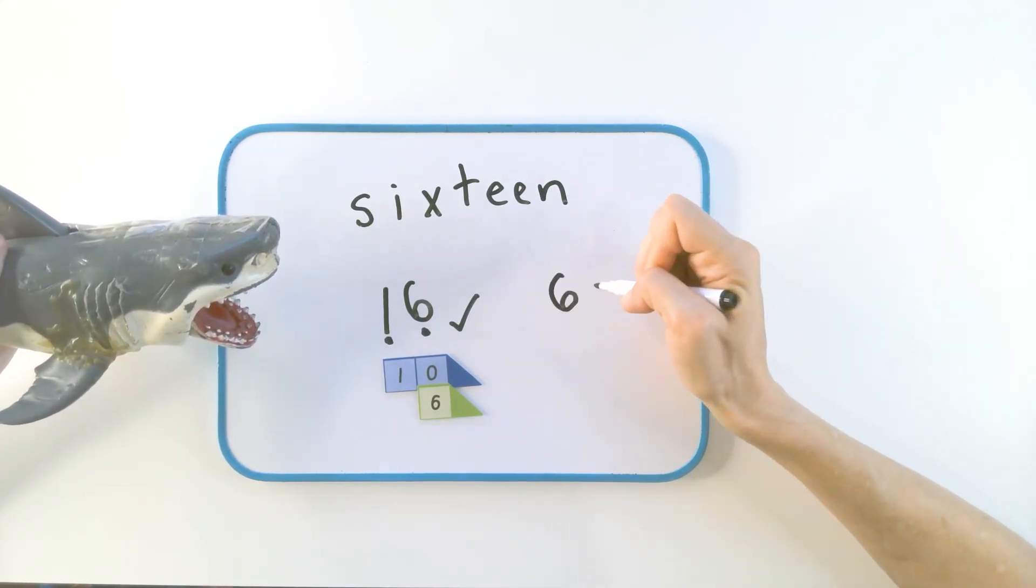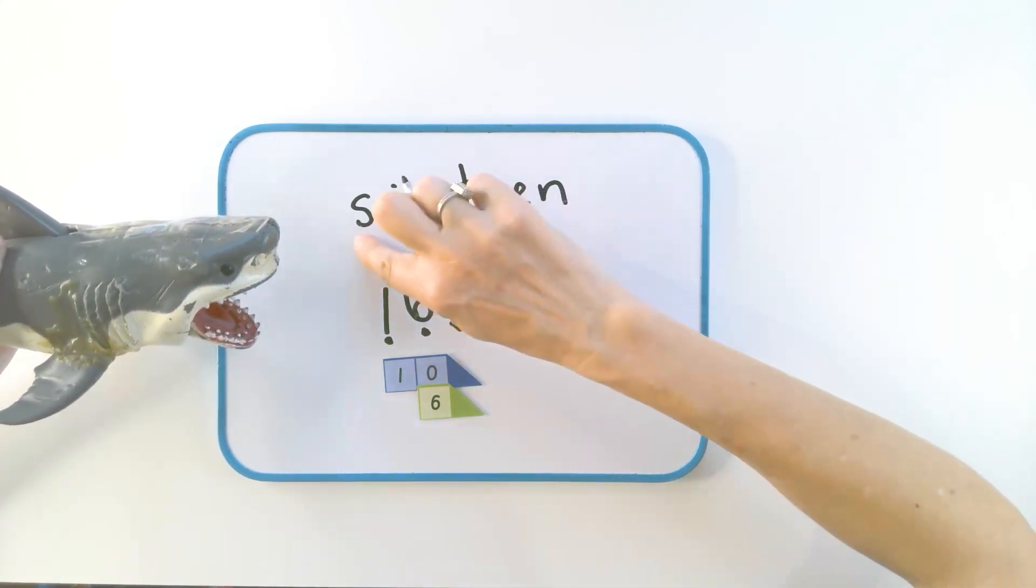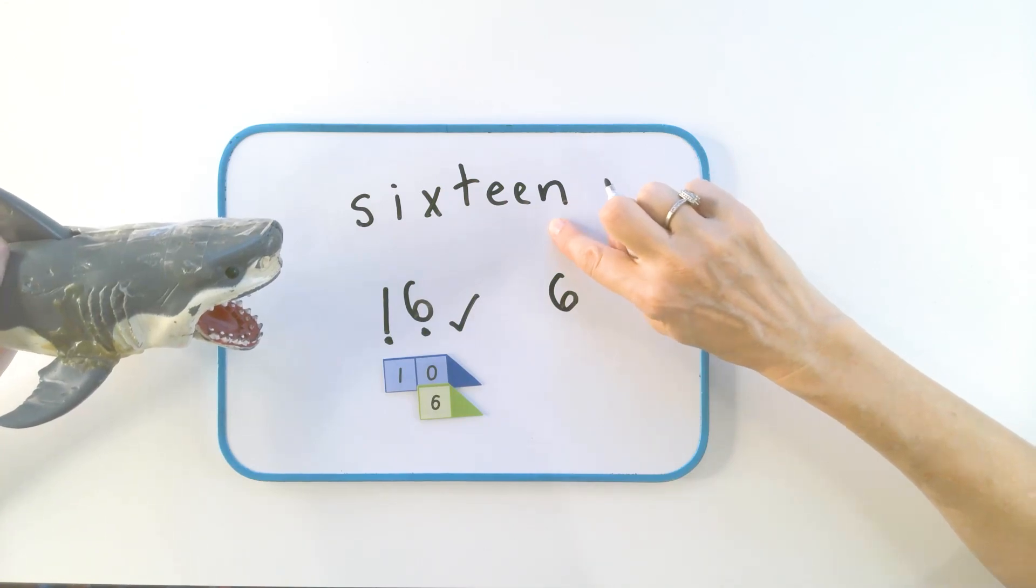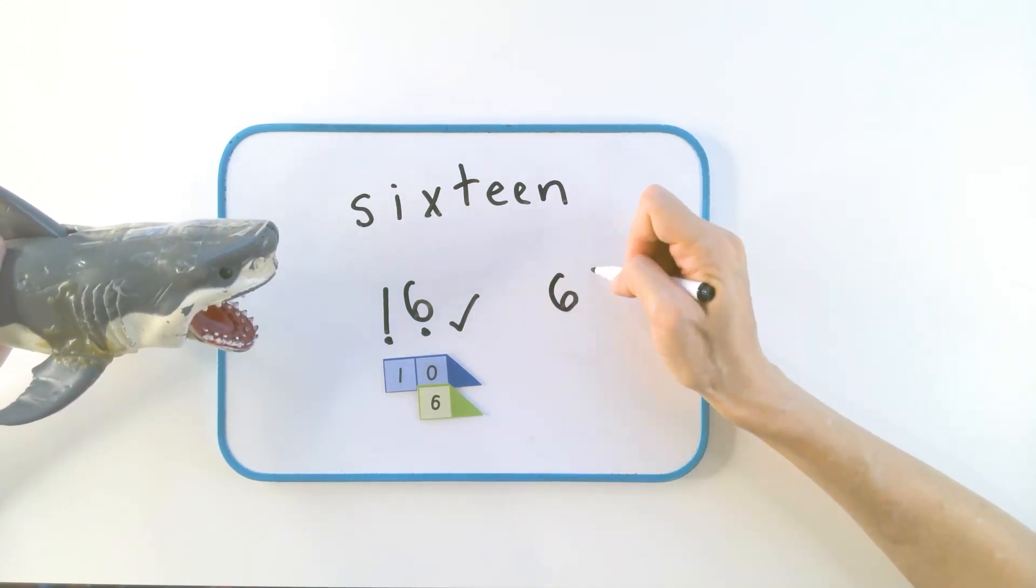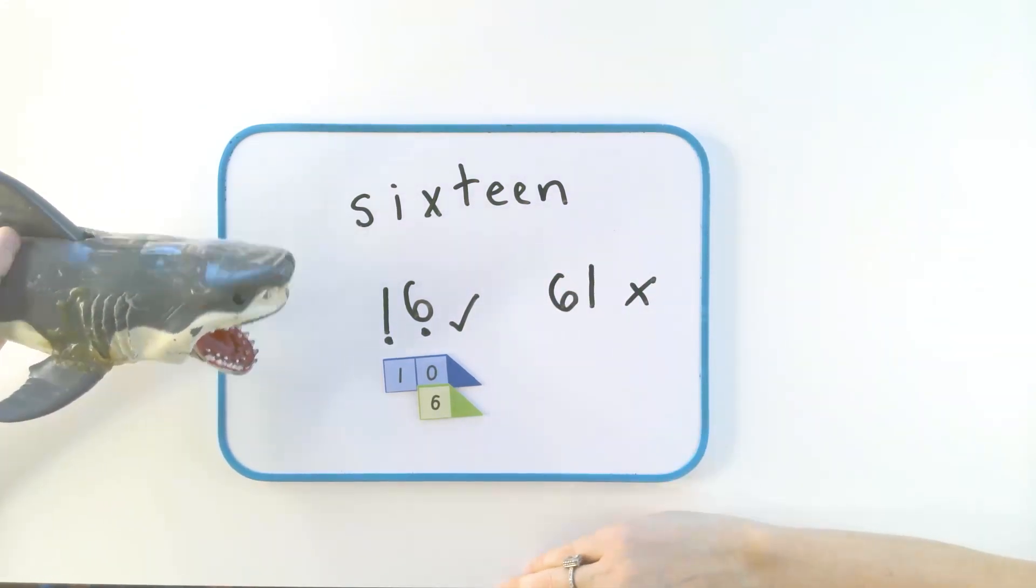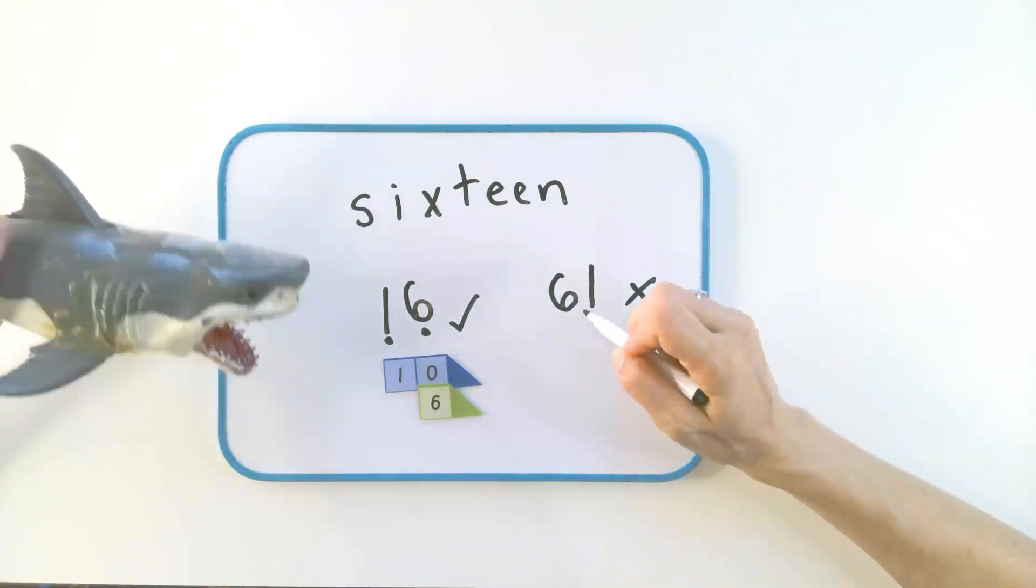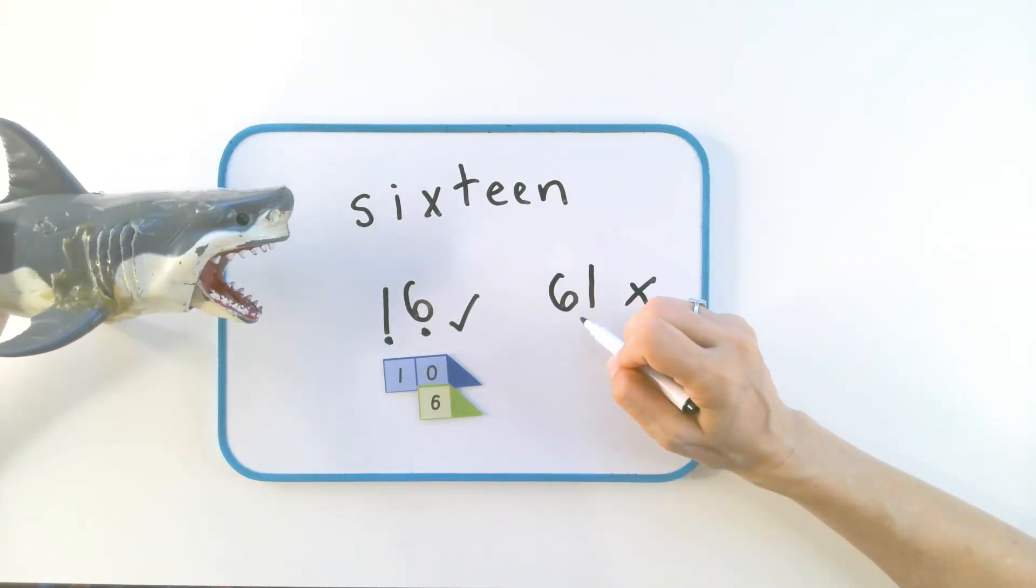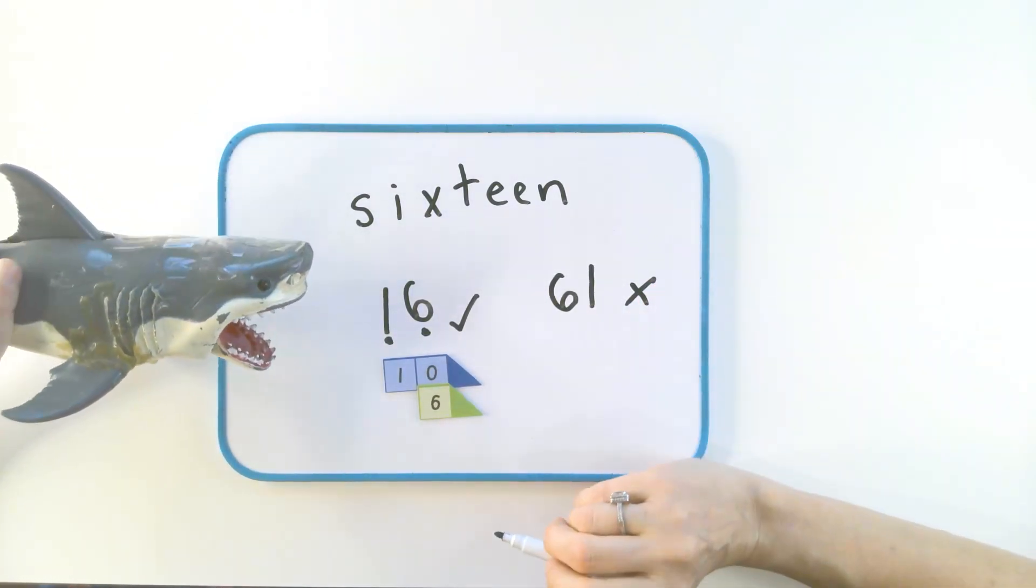17. Some children incorrectly use sounding out of numbers, and they go 16. That is not 16. What number is that one, Barty? 61. Oh, dear.